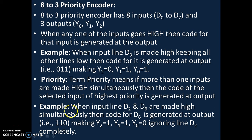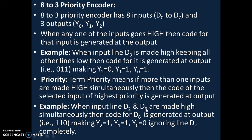An example is given here: when inputs D2 and D6 are made high simultaneously — at the same time — then the code for D6 is generated at the output. Why? Because between D2 and D6, D6 has the highest priority, since priority increases from D0 to D7. That's why D6 has higher priority compared to D2.